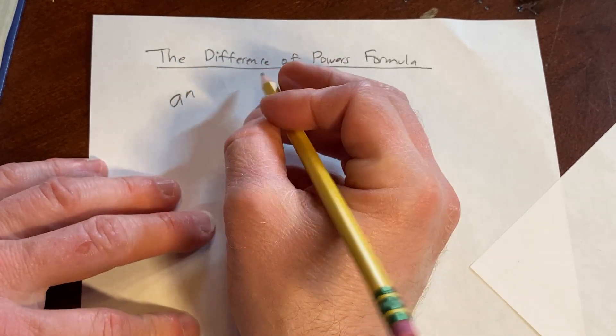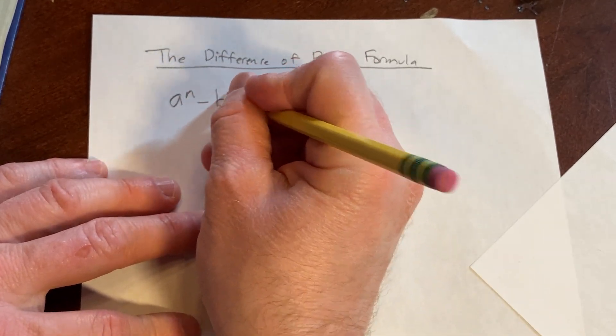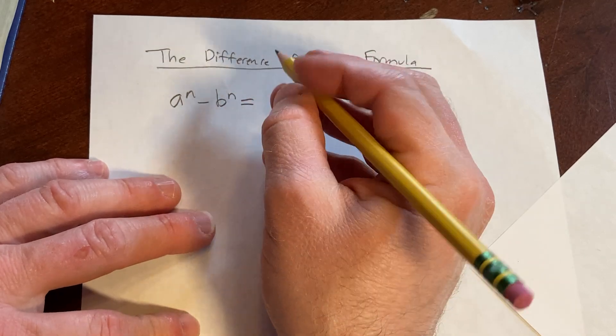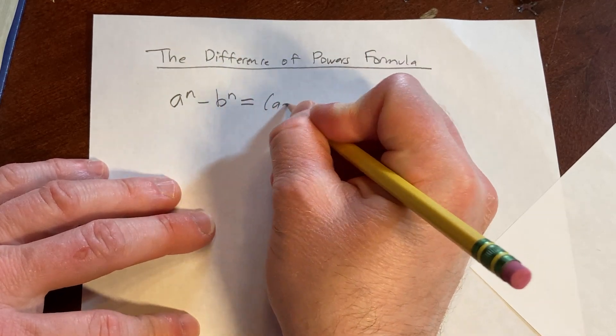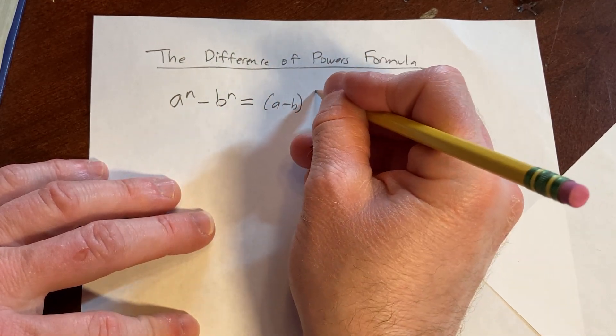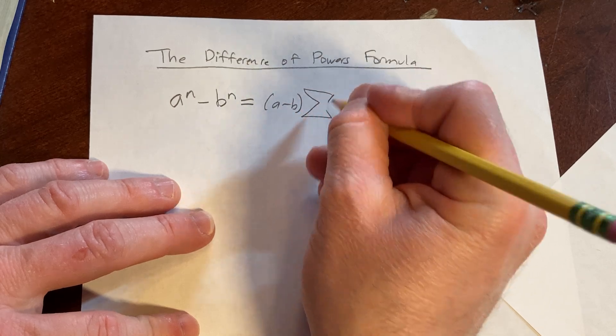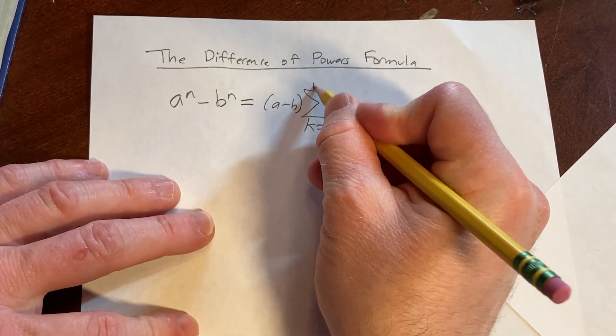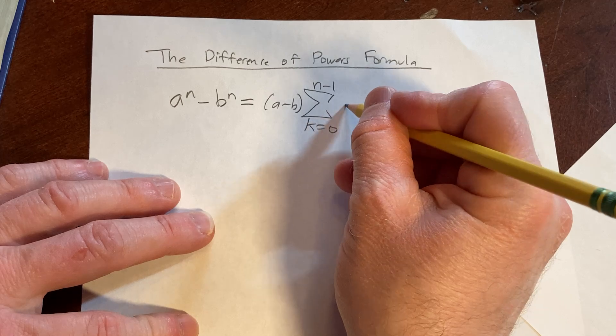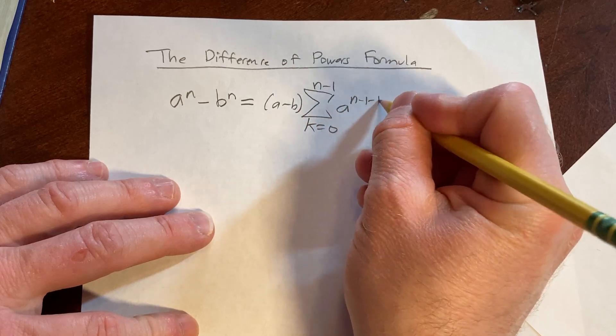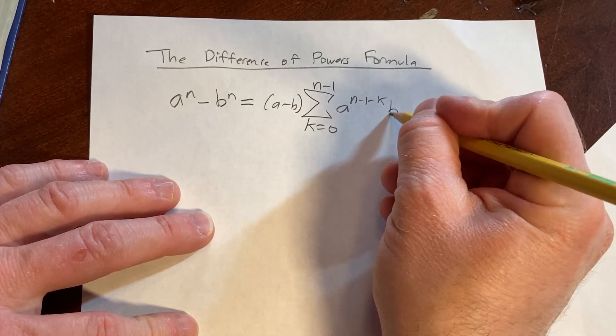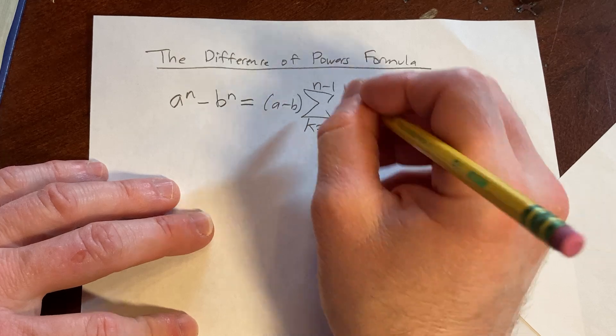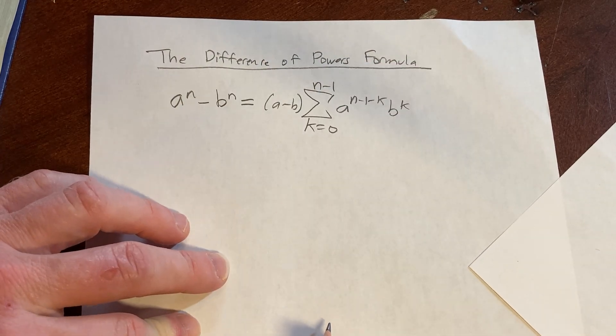It's a to the n minus b to the n, and that equals a minus b times the finite sum as k runs from 0 to n minus 1 of a to the n minus 1 minus k times b to the k. That's the difference of powers formula.